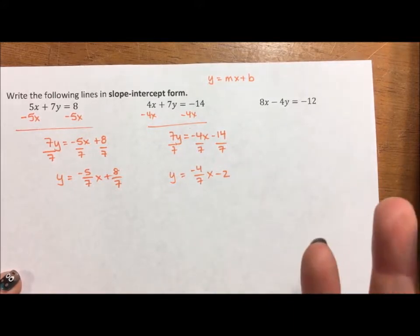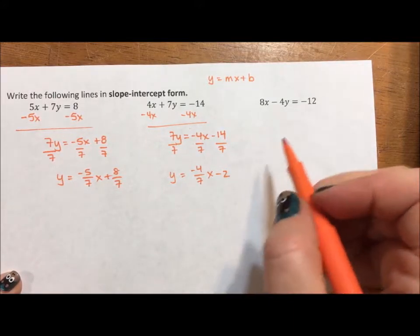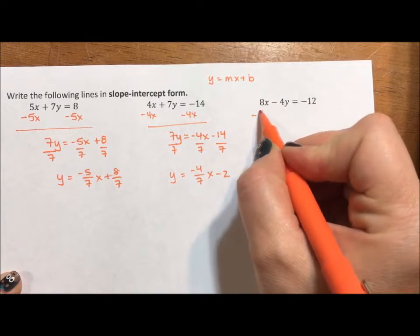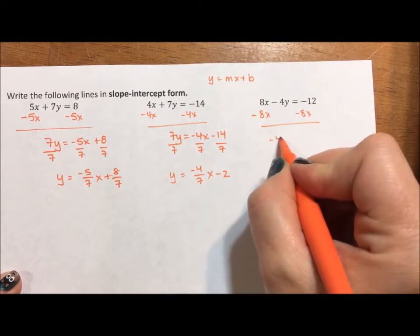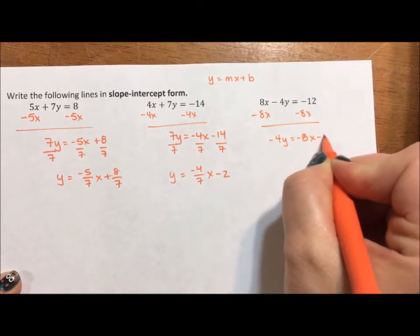So how can I make this harder? How can I add more steps? There's always a way. I'm going to subtract 8x from both sides, and I'm going to get negative 4y equals negative 8x minus 12.